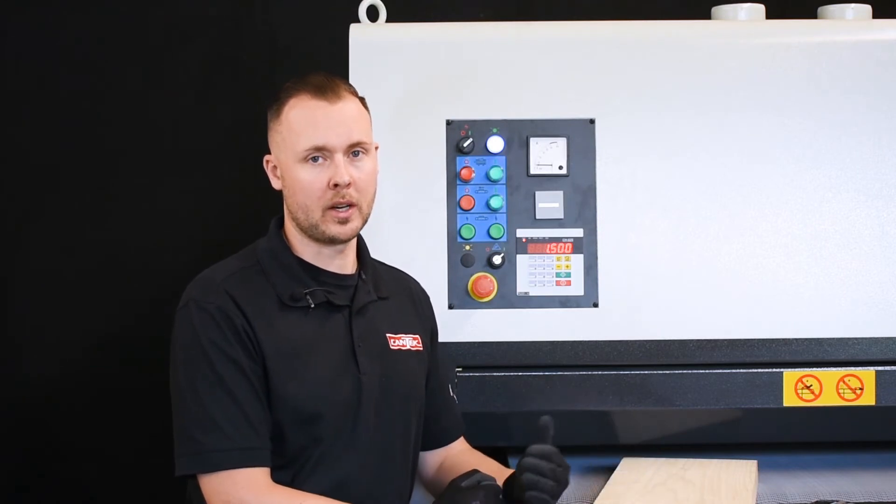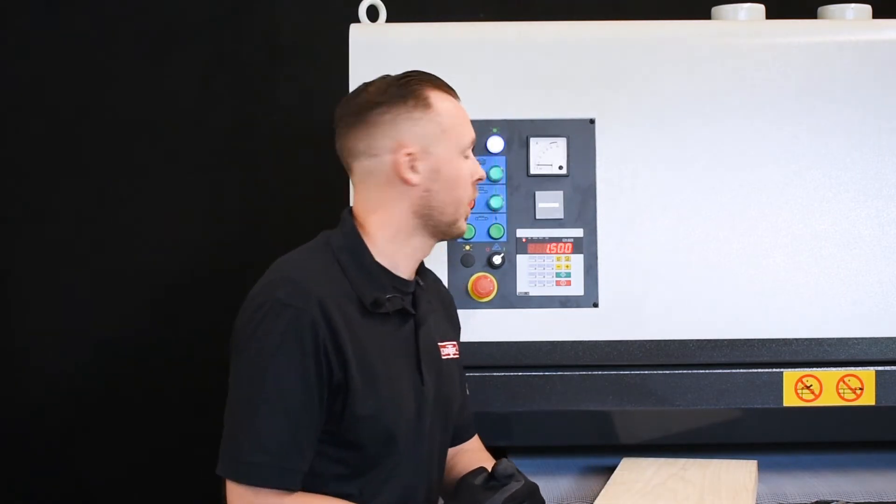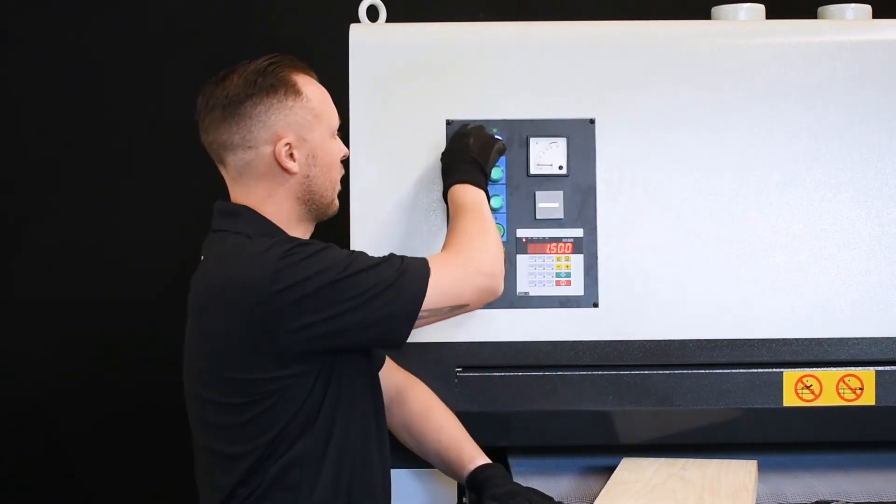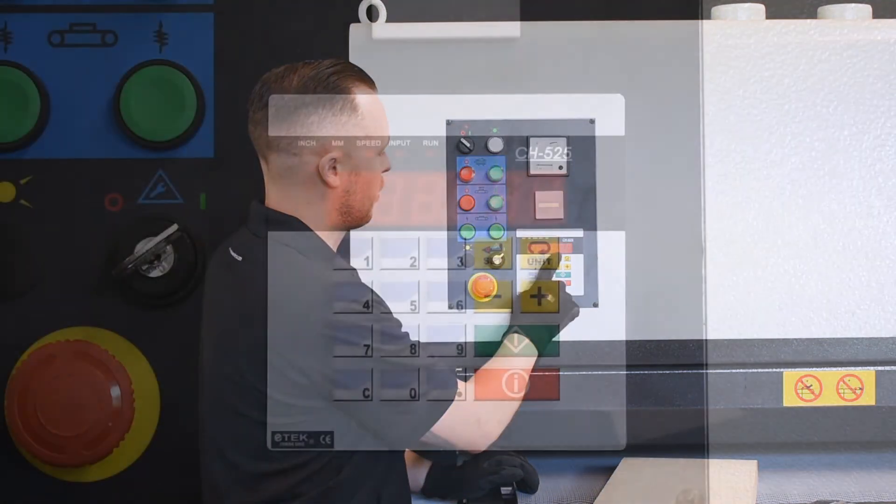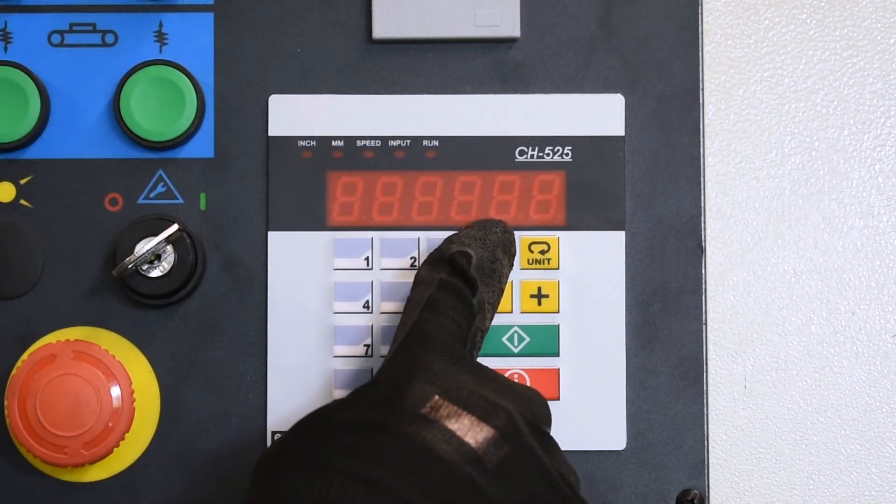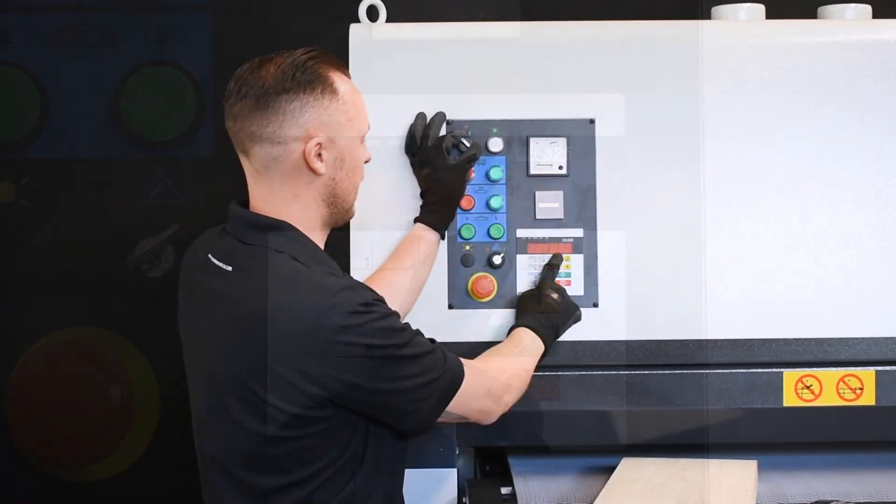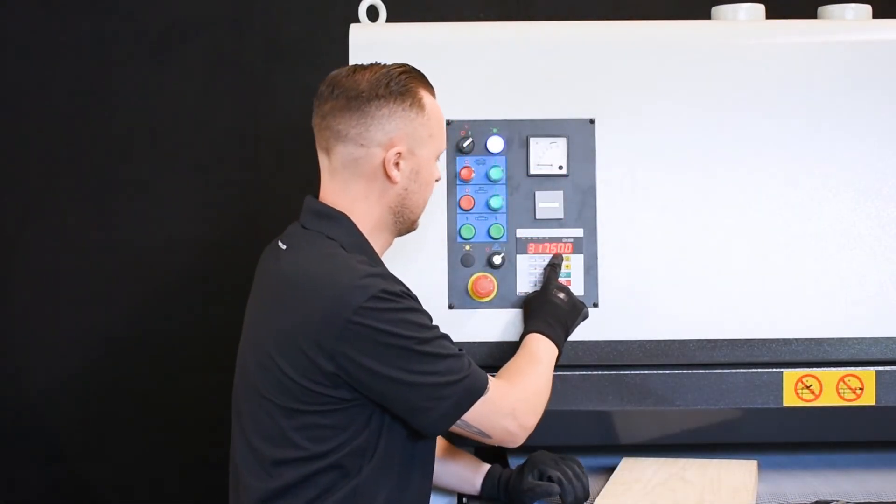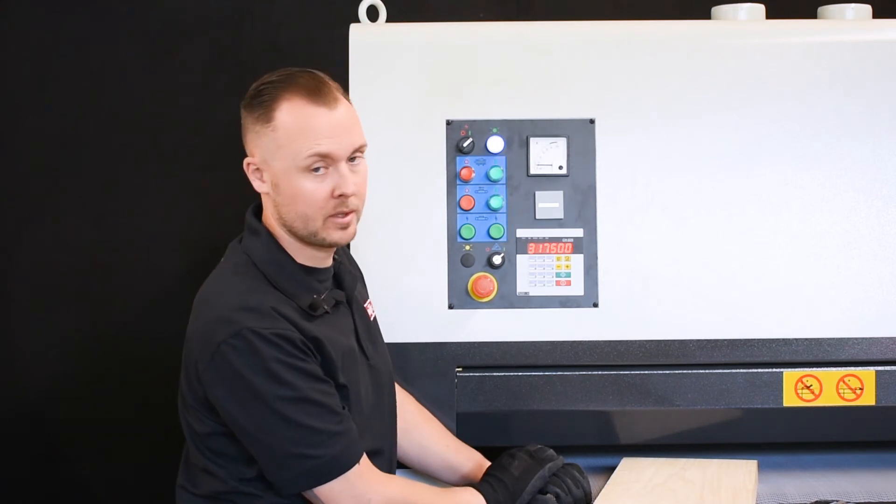After going through the recalibration process and if your dimension is still off you can check the resolution number. In order to do that you want to turn off the control power, press and hold the set button while turning back on the control power. This will display your resolution value.